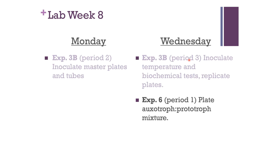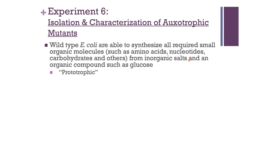On Wednesday, you're also going to perform Experiment 6, which looks at auxotrophs and prototrophs in a mixture of bacteria. You're going to categorize auxotrophic bacteria — mutants that have a deficiency in a biochemical pathway. In our case, we're looking at pathways that make amino acids, but in other fields one could look at pathways making nucleotides, carbohydrates, lipids, or other macromolecules.